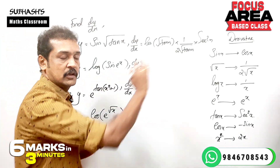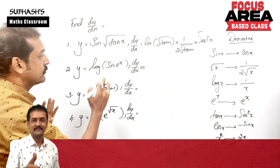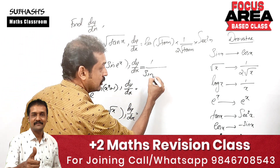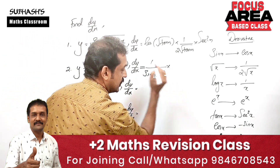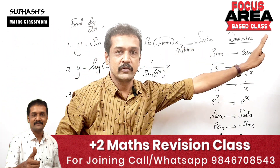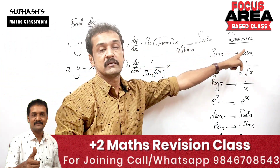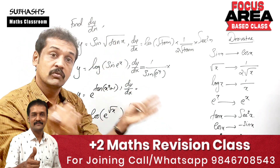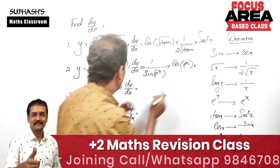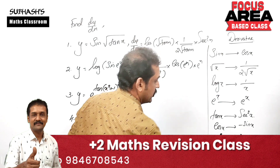Next, log of sin of e^x. Starting from log — what is the derivative of log x? 1 by x. So we get 1 by sin of e^x, then the derivative of sin of e^x is cos of e^x, and the derivative of e^x is e^x.